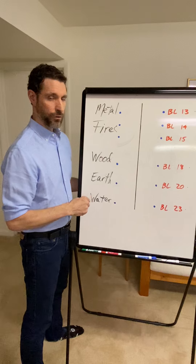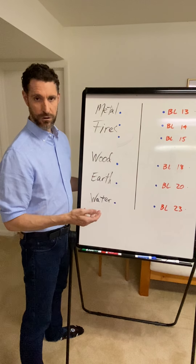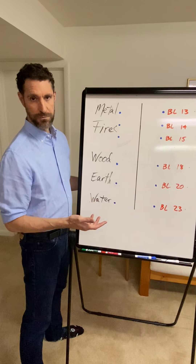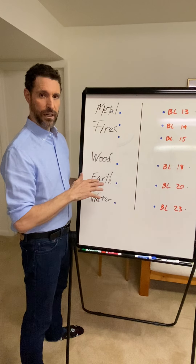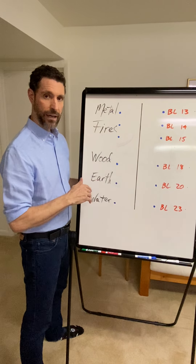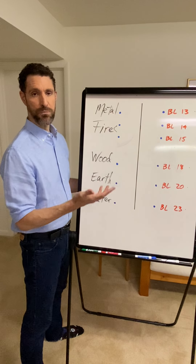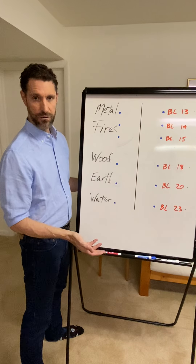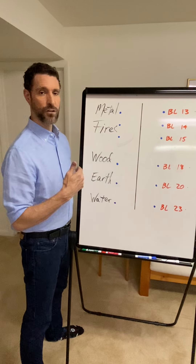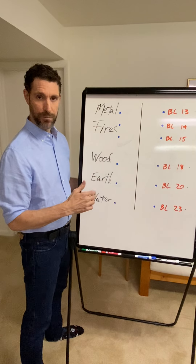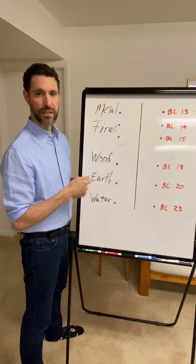These points are located on the back, which is a relatively yang area of the body. In the Ling Shu and some chapters of the Suwen, they talk about treating the front for disorders of the back, treating points on the back for disorders in the front, treating above for below and vice versa, left and right — reflecting yin-yang complementarity.